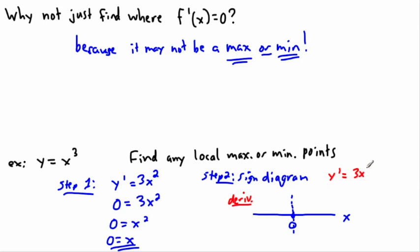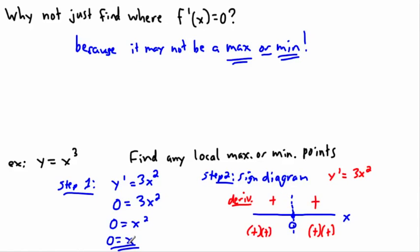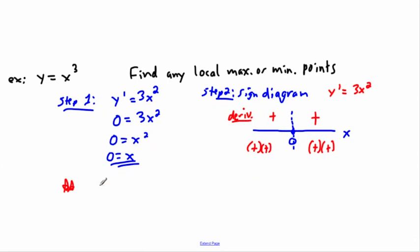The derivative equation is 3x². Taking a point to the left of zero, say x = -1: (-1)² = 1, and 3 × 1 = 3, which is positive. To the right, say x = 1: 1² = 1, and 3 × 1 = 3, still positive. So the derivative is positive on both sides — it didn't change sign.